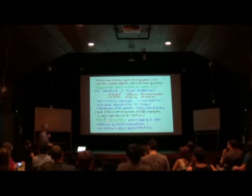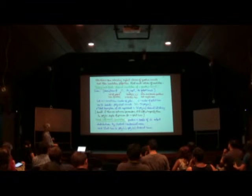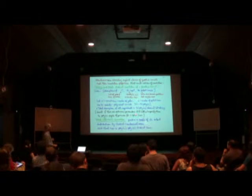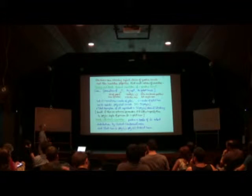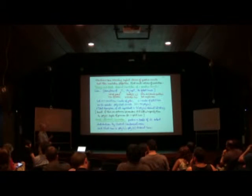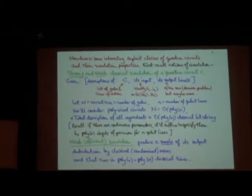A weak efficient simulation is: given this description, we want to produce a sample of the output distribution by purely classical means on a classical randomized computer, with at most a polynomial overhead in what the quantum process would run with. We're always happy to accept polynomial overheads, but not exponential ones.